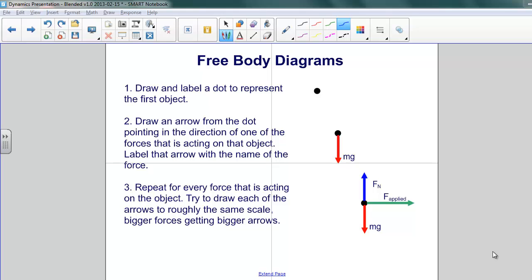First of all, draw a dot to represent the body in question. Once you've drawn a dot, begin drawing lines with arrows to represent each of the force vectors. Start with the first one, and once you've drawn that one, be sure and label it with the name of the force. In this case, it's weight. We've written mg. Notice that it's pointing in the downward direction.